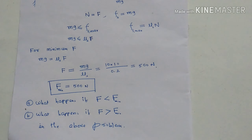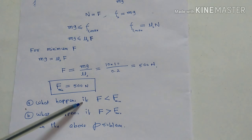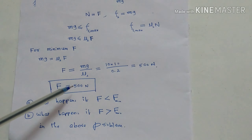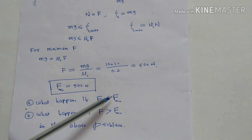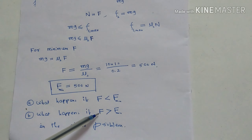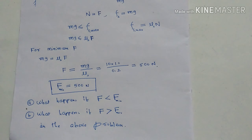I am giving you some questions — write the answers in the comments on my YouTube channel. Question A: what happens if F, the external force, is less than F minimum, that is less than 500 N? Question B: what happens if F applied is greater than F minimum, that is greater than 500 N, in the above problem? Solve these two questions and post your answers.